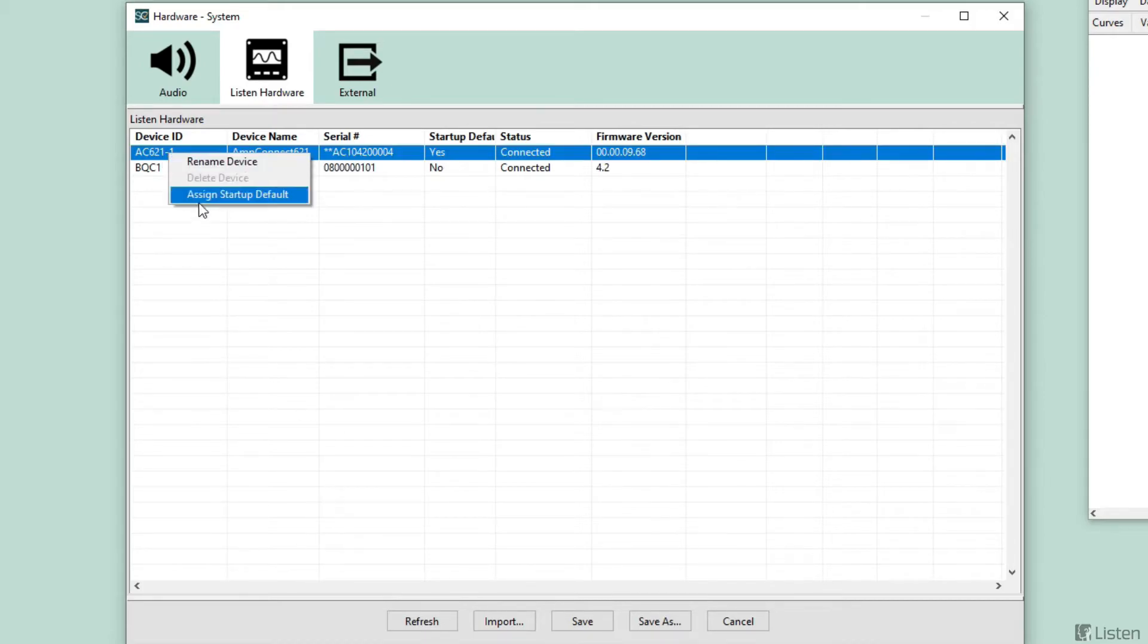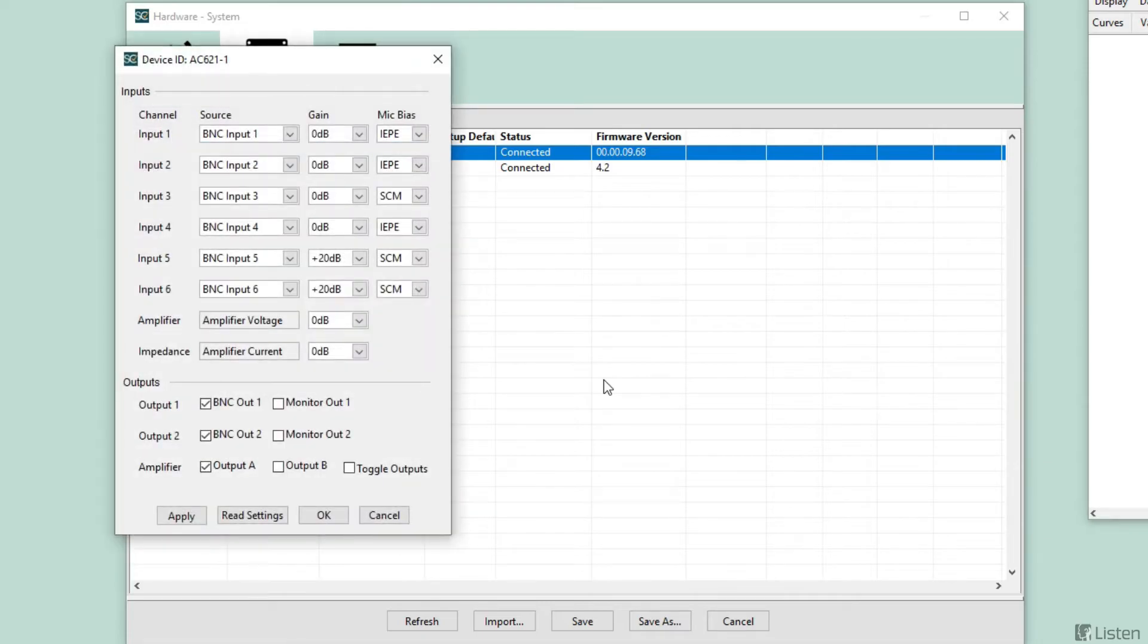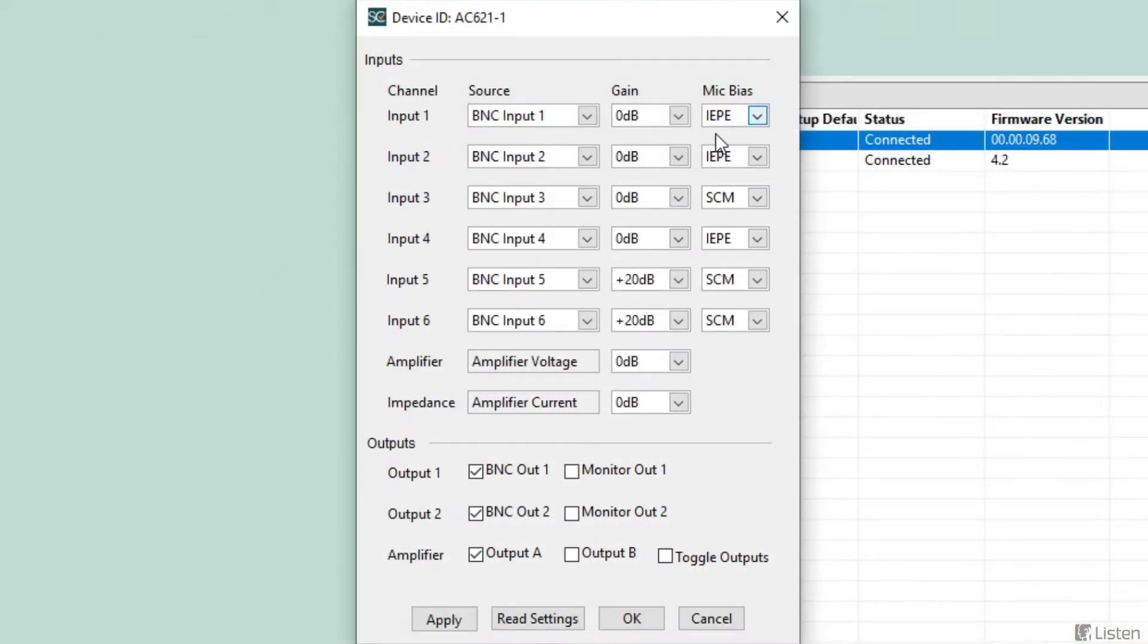And if I switch over to the Listen Hardware tab, fully integrated software support of the AmpConnect in Soundcheck 19. Here is my 621. With multiple inputs, I could configure each of these inputs uniquely. Here you'll see I've got two IEPE mic bias assignments, which is powering my head block here. I also have an SCM microphone on input three. And input four, I've got this quarter-inch reference microphone. And then here are the output assignments.